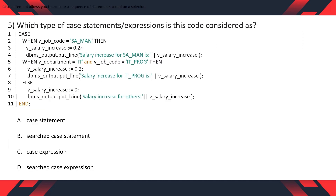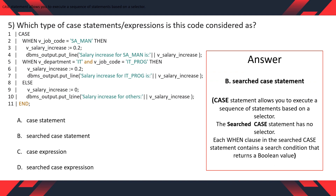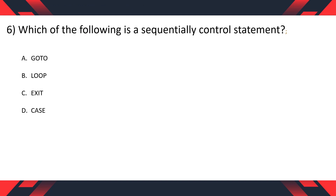Question 5: Which type of Case Statement or Expression is the given code considered as? Options: A. Case Statement, B. Searched Case Statement, C. Case Expression, D. Searched Case Expression. The correct option is B, Searched Case Statement. As learned previously, the Searched Case Statement has no selector, and the When clause contains conditions that return a Boolean value.